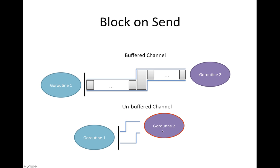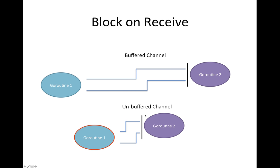Another way goroutine1 can be blocked is with an unbuffered channel where goroutine2 is not ready to read from the channel. In that case goroutine1 cannot send to it at all. With an unbuffered channel, once you send the first value, the other routine on the other side must be ready to receive it immediately. So blocking on send and blocking on receive are pretty much the same concept.